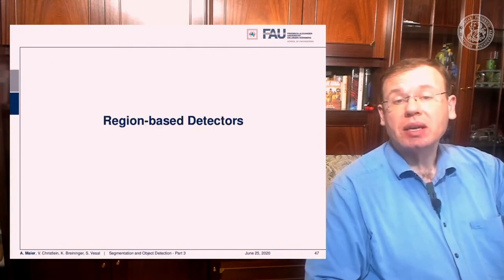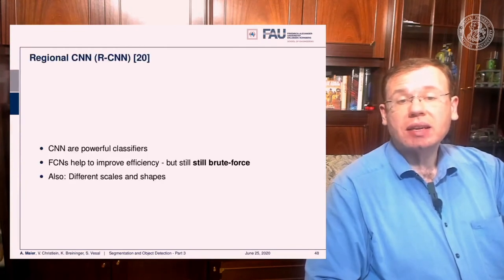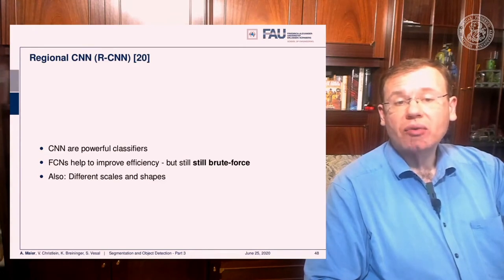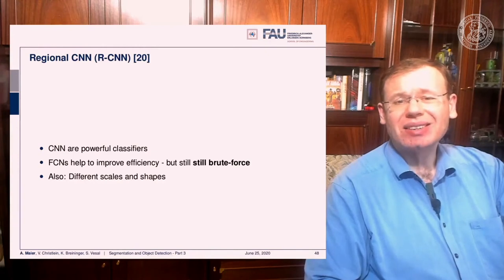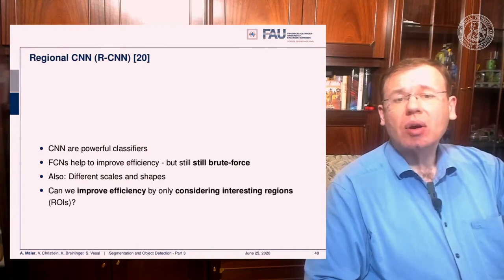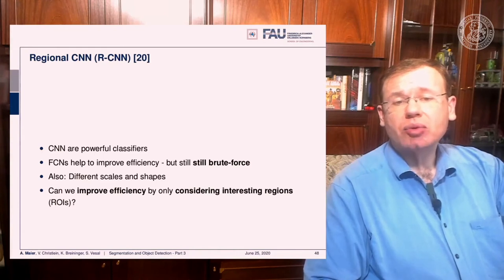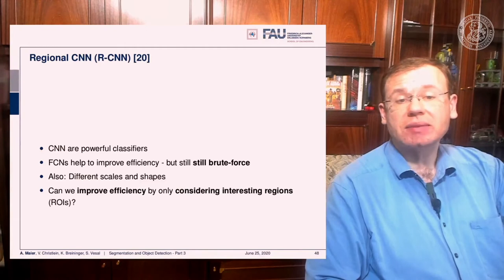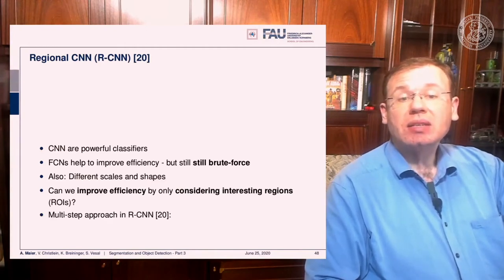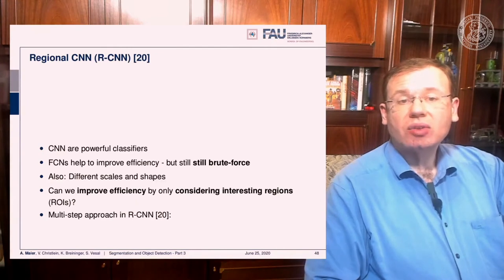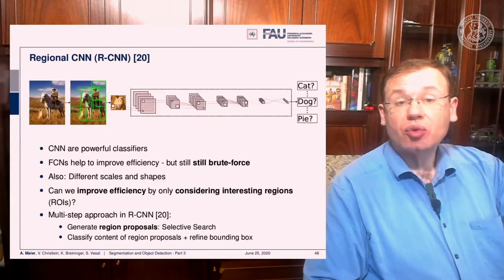This is why people have been looking at region-based detectors. CNNs are powerful classifiers, and fully convolutional networks improve efficiency, but they are still somewhat brute force. We can improve efficiency further by only considering interesting regions — regions of interest — which leads us to the regional CNN, or RCNN.